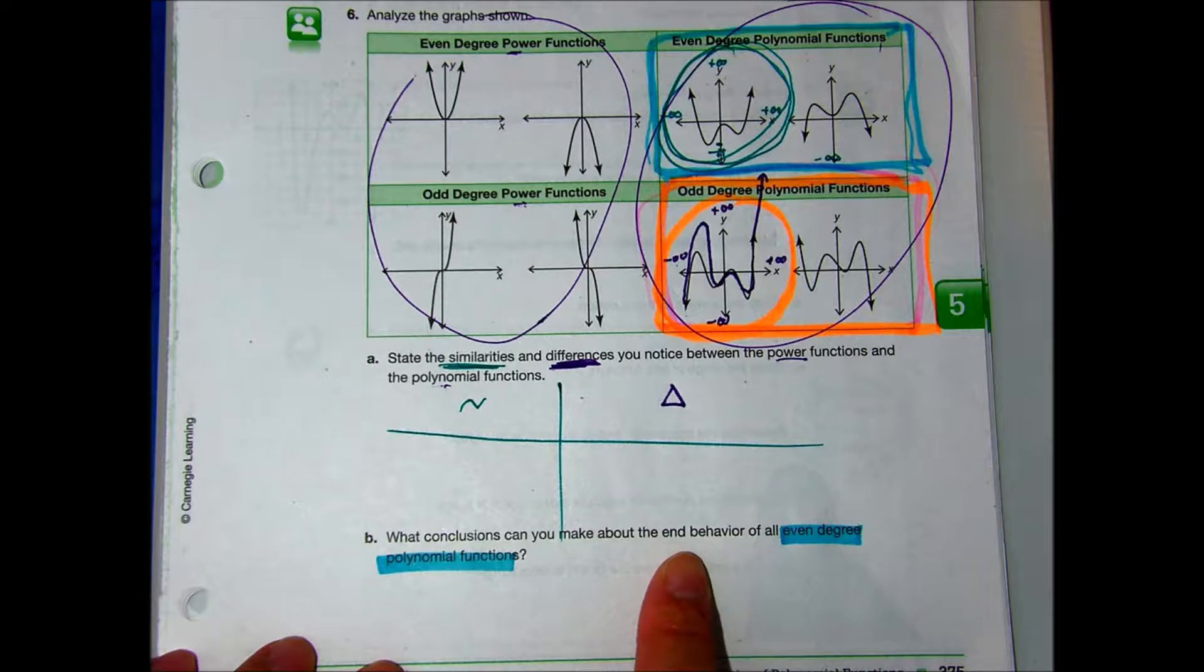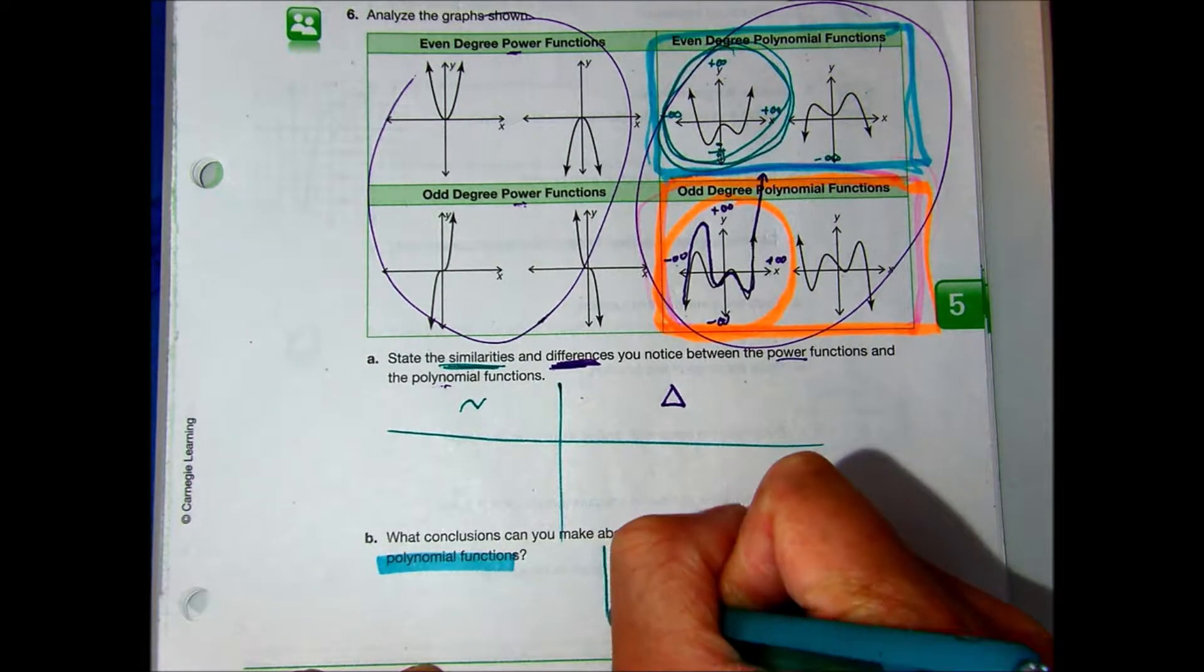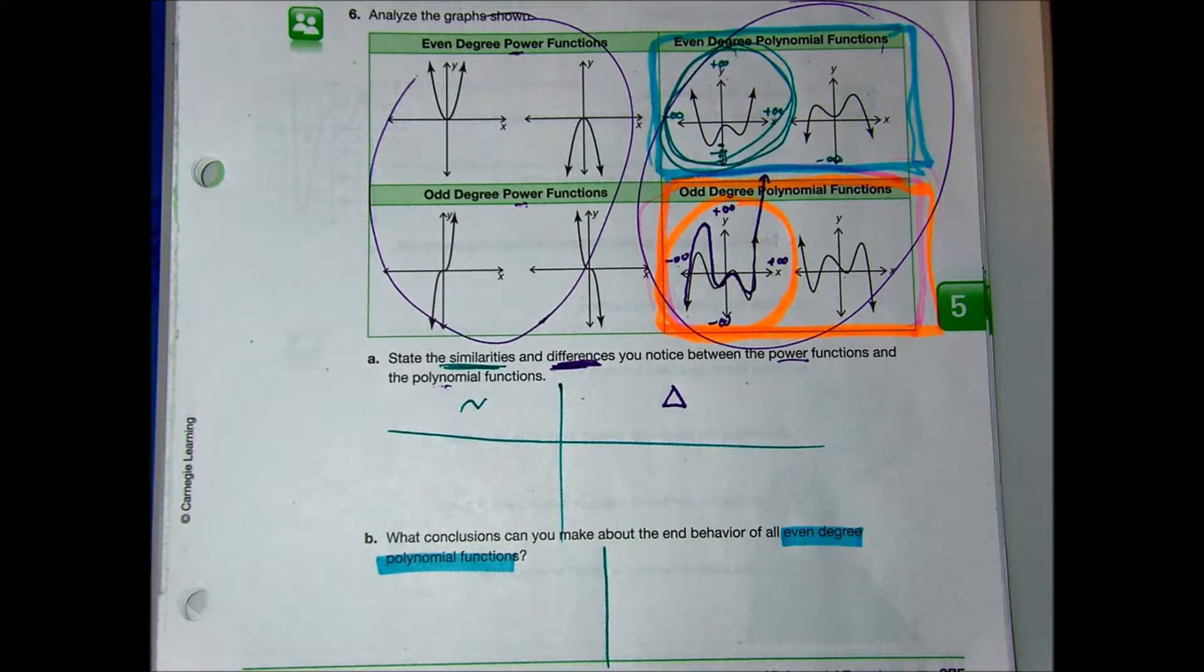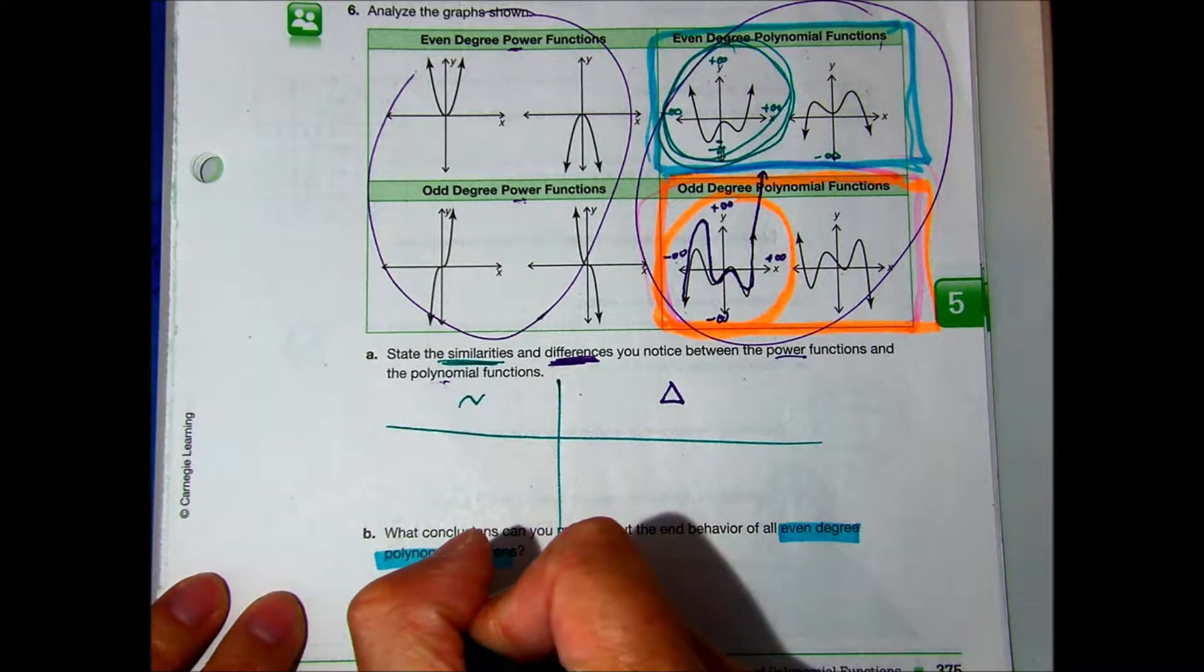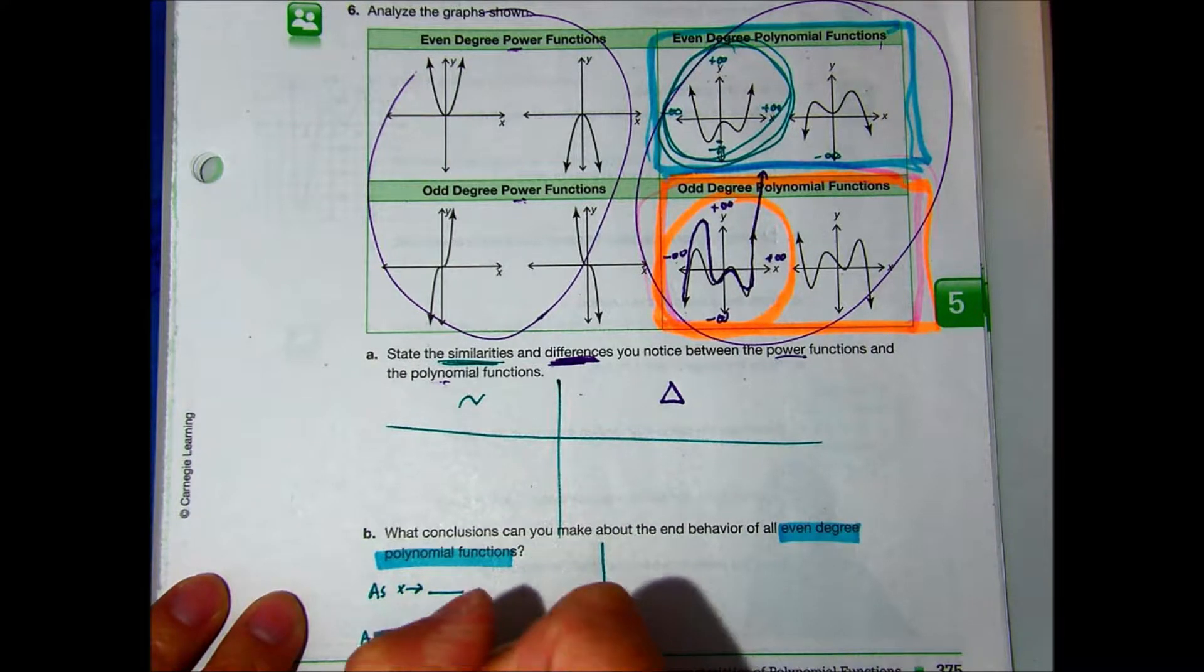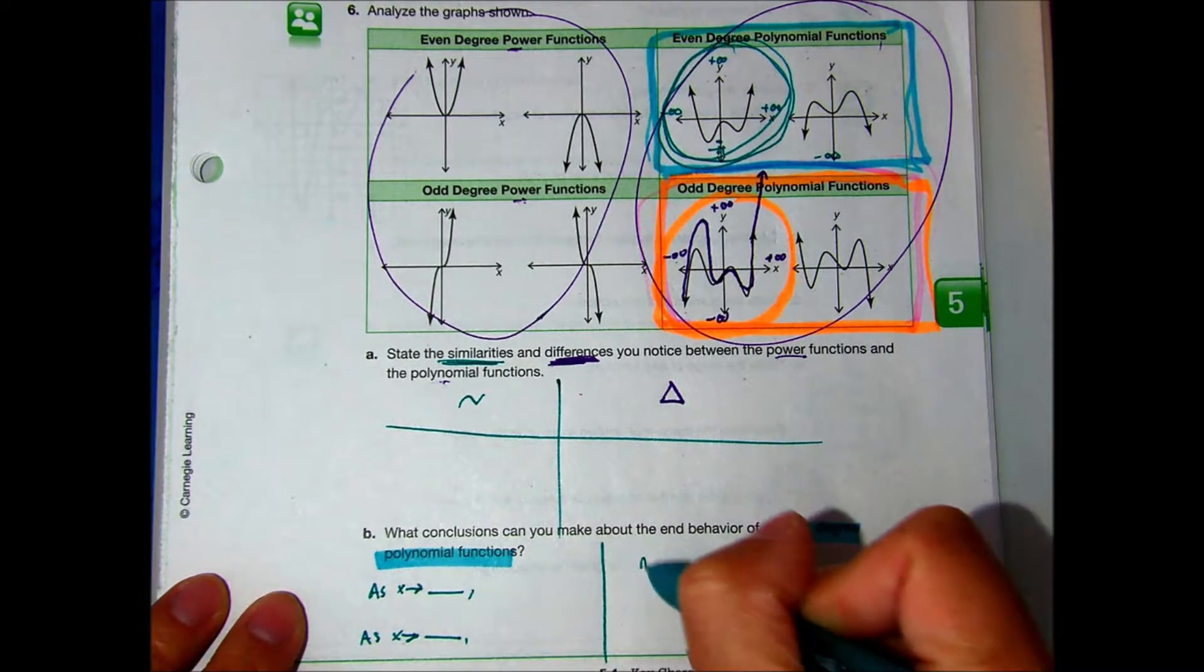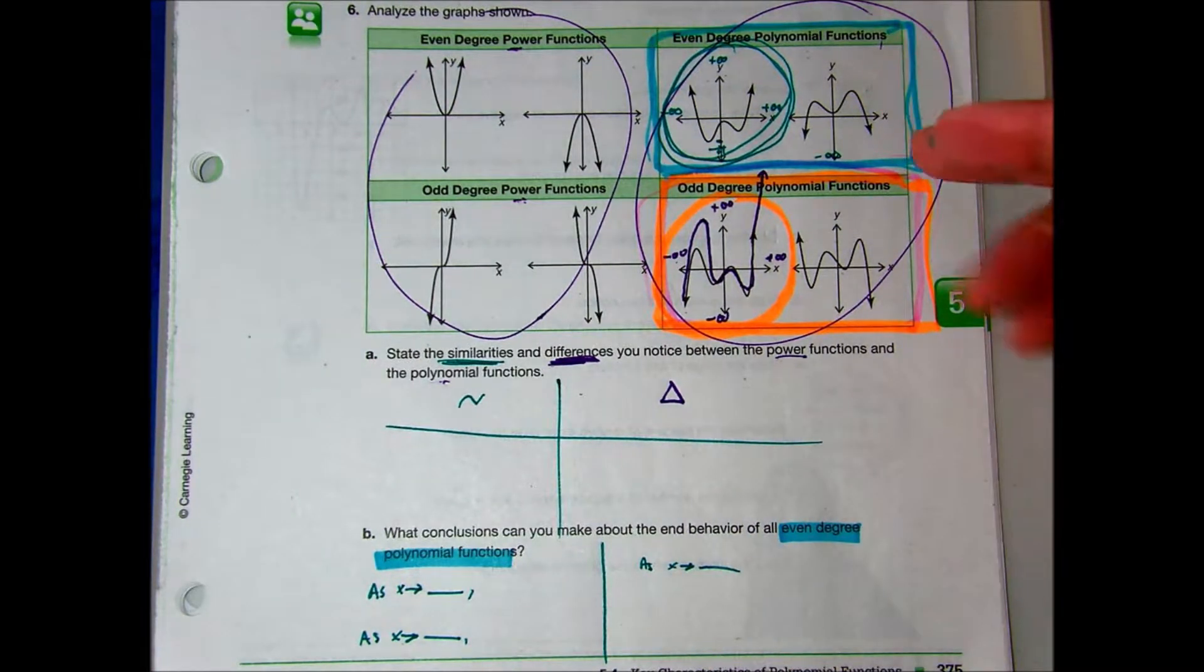Partner B, whisper to partner A. There's one word that starts the sentence for end-behavior. On the count of three. One, two, three. As. Okay, so you and your partner are going to complete both of these, and then we're going to go over it in about four minutes. Ready, say go.